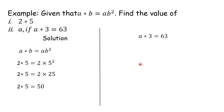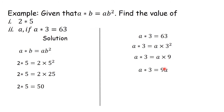For part two, we are given that A★3 is equal to 63. We first obtain A★3: A remains as A and B is 3, so substituting gives A times 3 squared. 3 squared gives us 9, so that gives us A times 9, which equals 9A. But A★3 was equal to 63, so 63 equals 9A. Dividing both sides by 9 gives A equals 63 divided by 9, and 63 divided by 9 gives us 7. So the value of A is equal to 7.